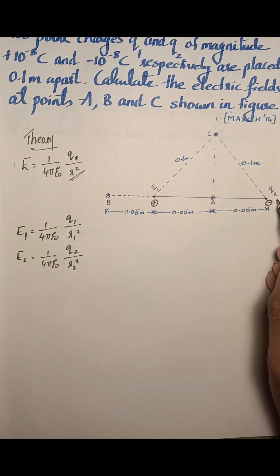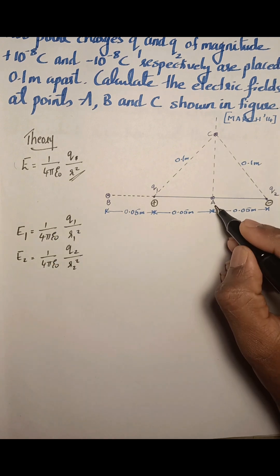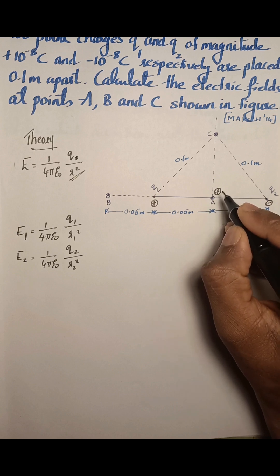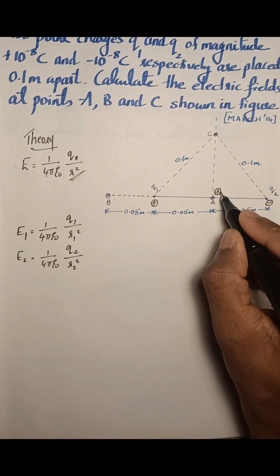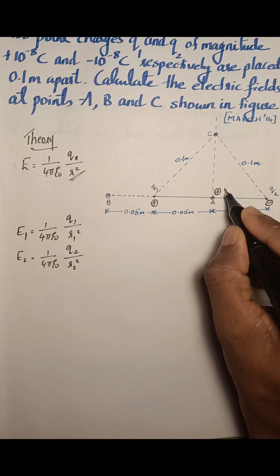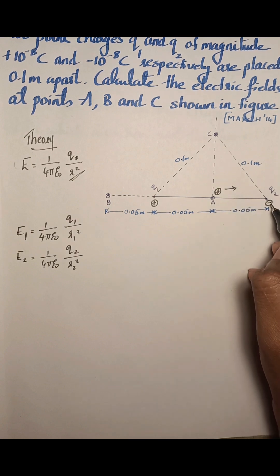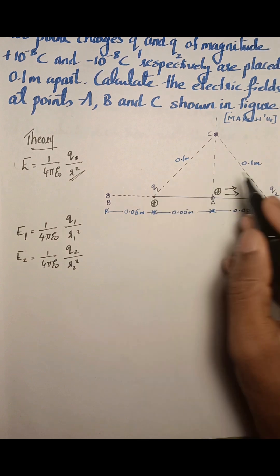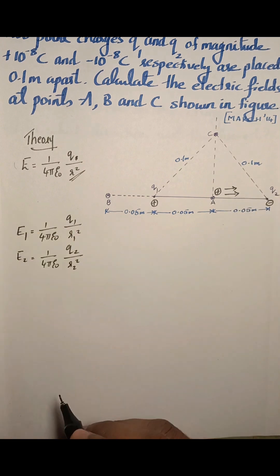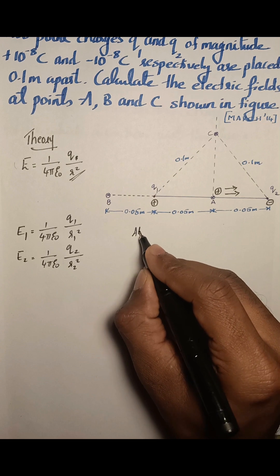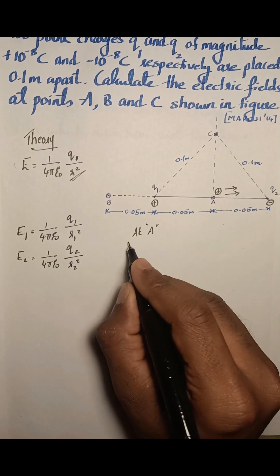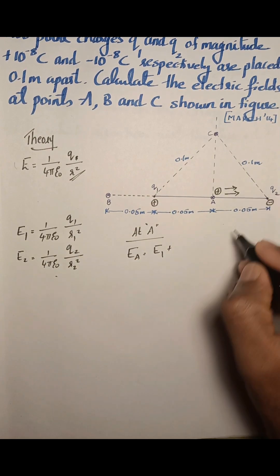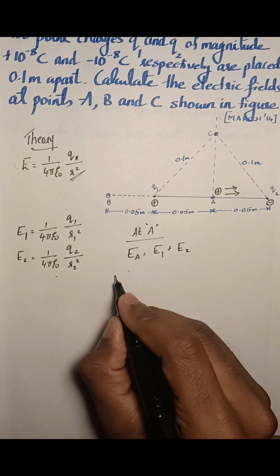Now we will apply this equation to point A. Assume a unit positive charge is placed at A. The positive charge Q1 will repel the unit positive charge at A in one direction, and the negative charge Q2 will attract the unit positive charge in the same direction. So the electric fields due to both charges at point A are in the same direction. Since electric field is a vector quantity, the net electric field at A is the sum of these two electric fields.